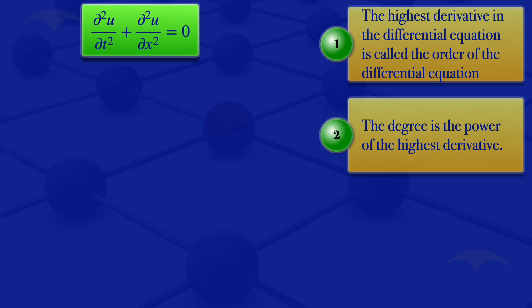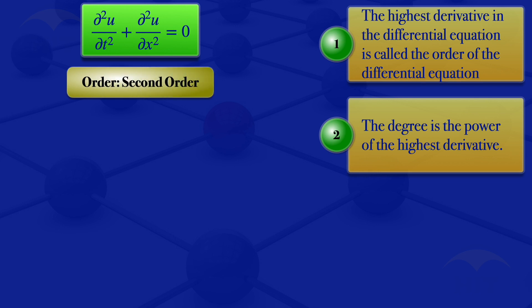Moving on to the next equation — that partial derivative. We look at the highest derivative we are having; we have the second derivative on both parts. So the highest derivative is a second derivative, meaning the order is second order. For the degree, these are raised to the power of 1, so the degree is 1. This is a second order partial differential equation with degree 1.